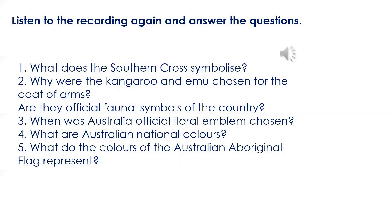Today we are going to talk about the Australian national symbols. The Australian national flag has three elements on a blue background. The Union Jack acknowledges Australia's historical links with the United Kingdom. Below the Union Jack is a white Commonwealth Star — it has seven points representing the unity of the six states and the territories of the Commonwealth of Australia. The Southern Cross is shown on the right-hand side of the flag. This constellation of five stars can be seen only from the Southern Hemisphere and is a reminder of Australia's geography.